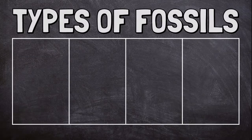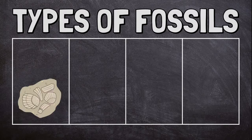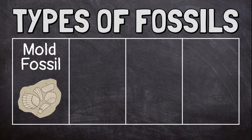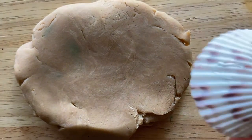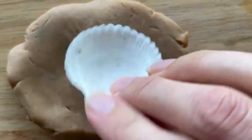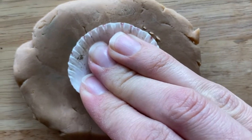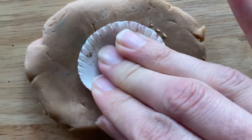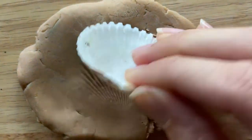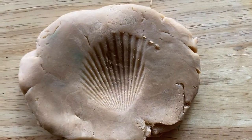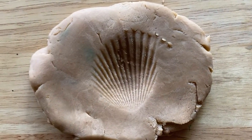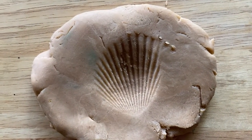There are several different kinds of fossils. Sometimes a plant or animal just leaves an imprint behind — this is called a mold fossil. Imagine pressing a leaf or shell into soft clay or mud and then removing it. You would see the shape of the leaf or shell pressed into the mud. If the mud hardened into rock, it would become a mold fossil.